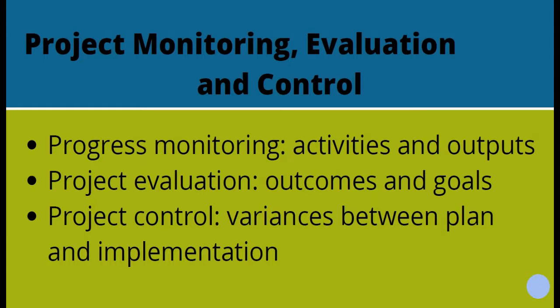In this topic we're going to look at monitoring, which covers activities and outputs. Evaluation, which covers outcomes and goals. These are all part of the logic matrix, with monitoring relating to the lower two levels and evaluation relating to the upper two levels. And project control, which is a system to address and manage variances between the plan and the implementation of your project.